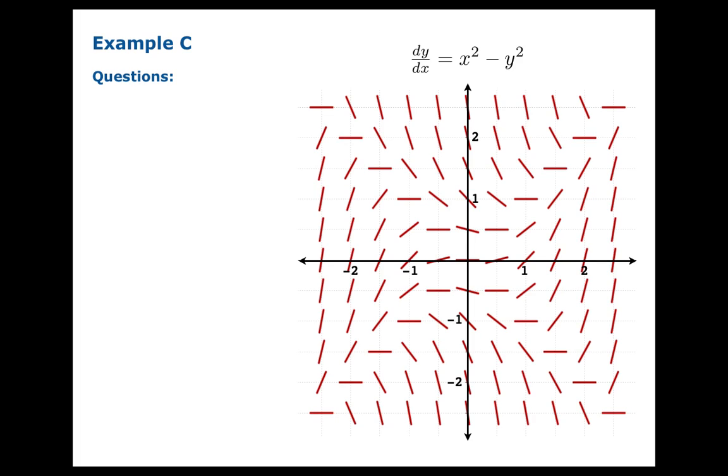Here's Example C, which is obviously more complicated: dy/dx equals x squared minus y squared. We've used some software to generate the slopes, but we could analyze this—it's worth analyzing a little bit what's going on here. So one question is, when is dy/dx equal to zero?